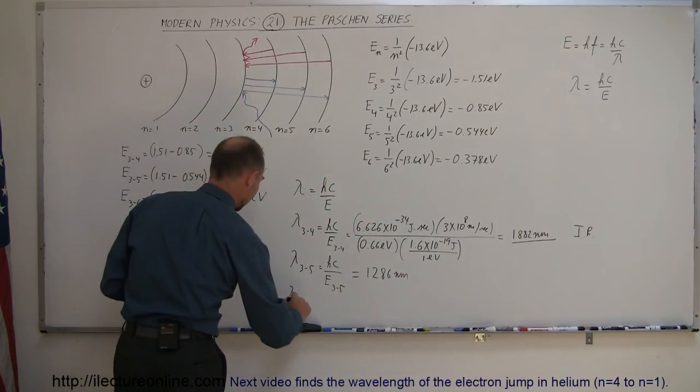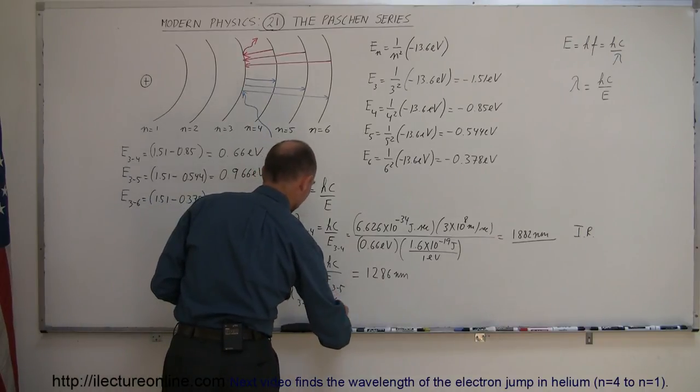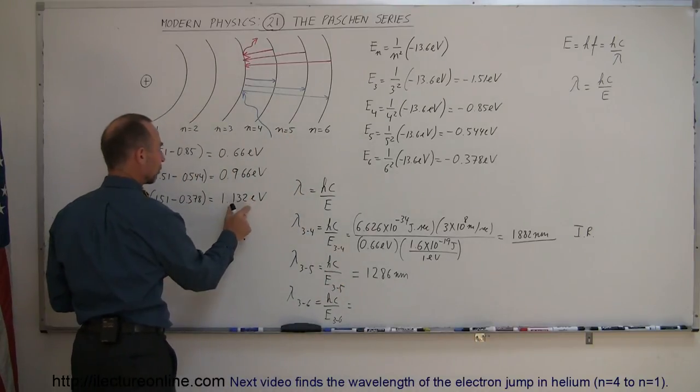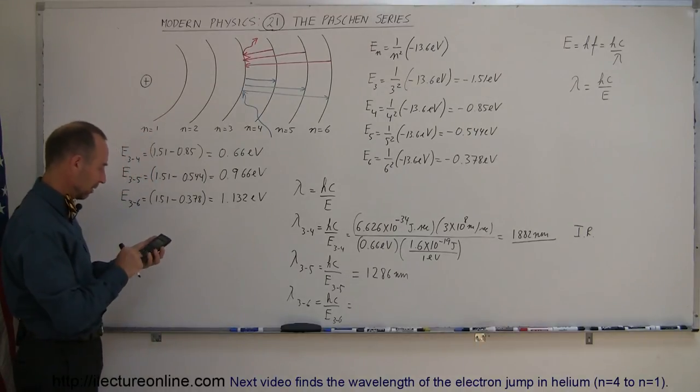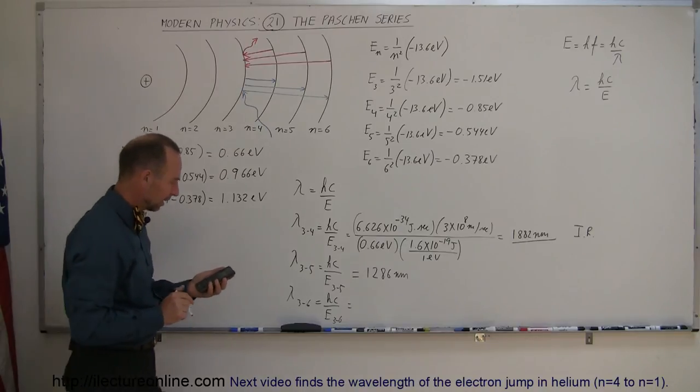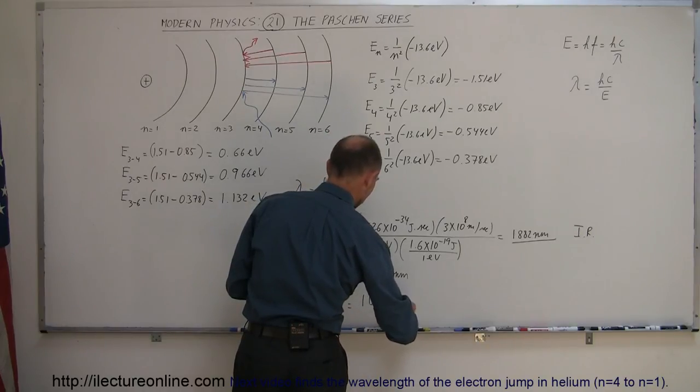Let's do one more. The wavelength difference from 3 to 6, that's equal to hc over the energy level between 3 and 6. So instead of taking the 0.966 electron volts, we'll use the 1.132 electron volts. That's times 0.966 divided by 1.132 equals, and that gives us a wavelength of about 1098 nanometers.